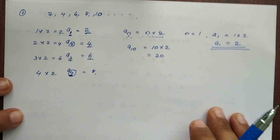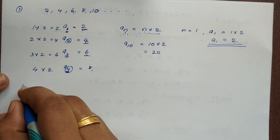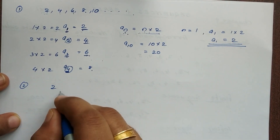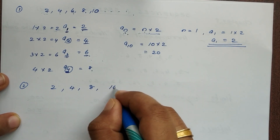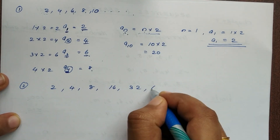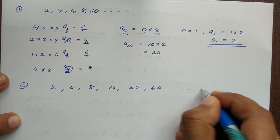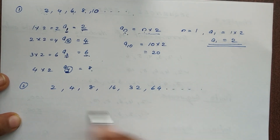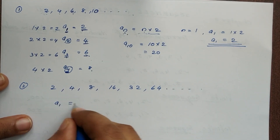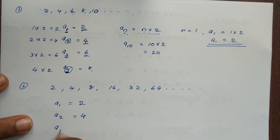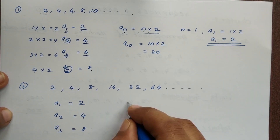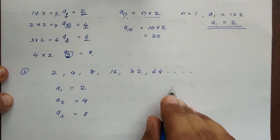Let's take the second example: 2, 4, 8, 16, 32, 64, etc. Here a1 is equal to 2, a2 is equal to 4, and a3 is equal to 8. Let's find the general term for this sequence.